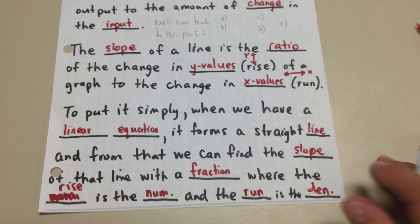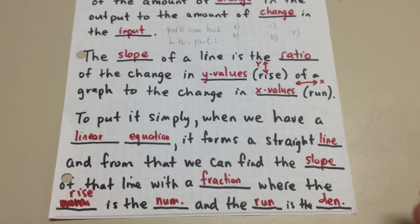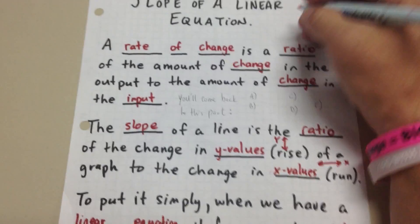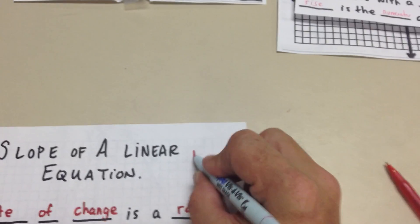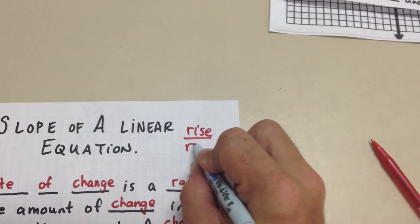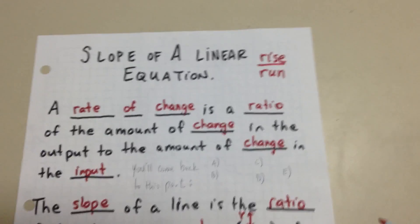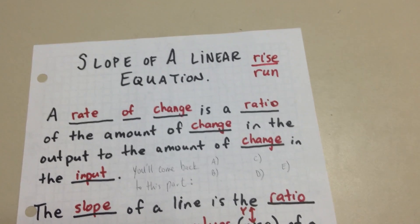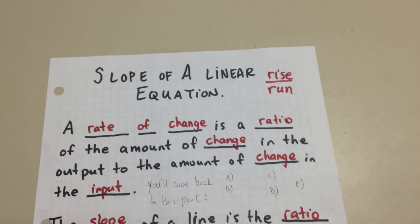And at the top here, I want you to write something. I want you to write rise over run, because that's the way we say it. Rise over run. You need to find the slope. Rise over run.